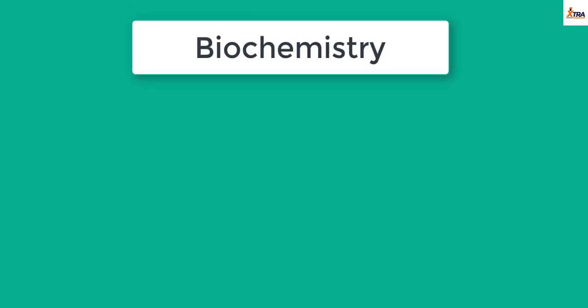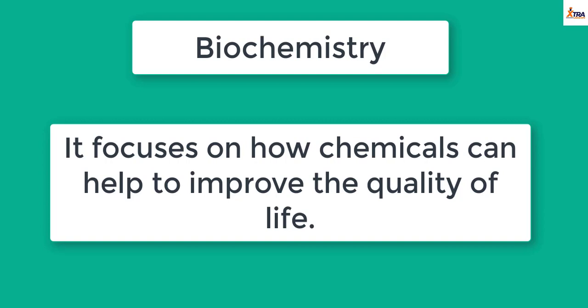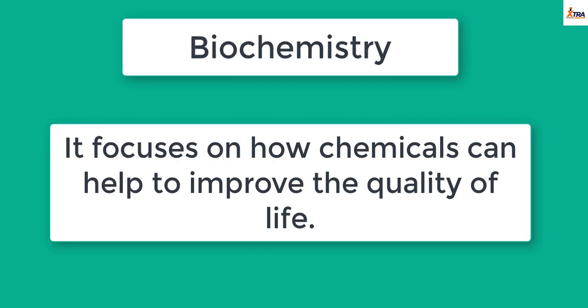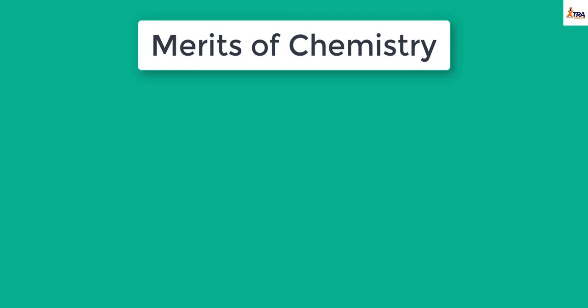Another way chemistry has helped us is in biochemistry. Biochemistry focuses majorly on research, how chemicals can help improve the quality of life. That is why you have the word bio. Bio means life. Chemistry comes from chemistry. So how chemicals can be used to influence quality of life is called biochemistry. Maybe it's food or drugs or radiations or anything. How you can convert chemistry into life, like into humans or animals or plants, improving their quality of life is called biochemistry.